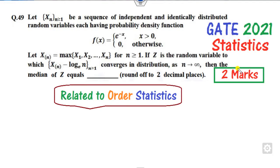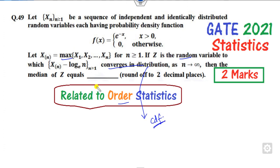Welcome everyone. This is the next question from GATE 2021, worth two marks. Reading the statement, you can analyze that this involves ordered statistics. The question asks you to find a random variable Z which converges in distribution — meaning you have to find the CDF — and then find the median.